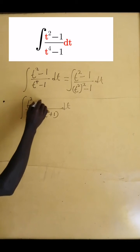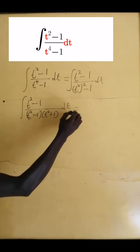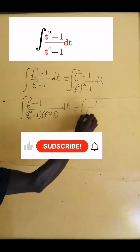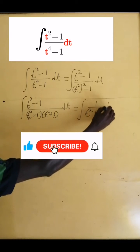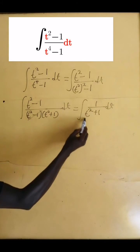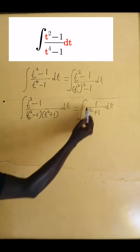And this is very simple: t squared minus 1 cancels t squared minus 1, and we have the integral 1 divided by t squared plus 1 dt. Now the integral of 1 divided by t squared plus 1 dt is a standard integral.